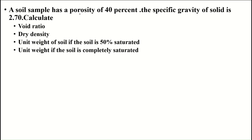A soil sample has a porosity of 40% and a specific gravity of solids of 2.70. Calculate the void ratio, dry density, unit weight of soil if the soil is 50% saturated, and unit weight of soil if the soil is completely saturated.